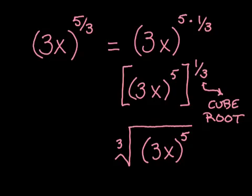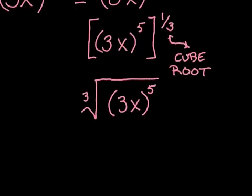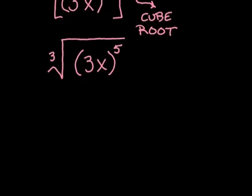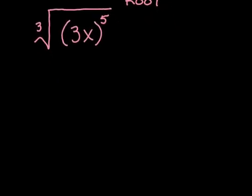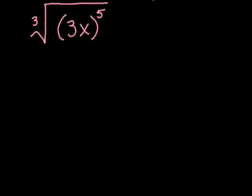Now it's just a matter of putting this into simple radical form, meaning simplifying it as much as possible. So we're going to take our radical here, again moving it over so I have some more room. And first look at this part. By the rules of exponents, 3x to the 5th, that whole amount in parentheses, is going to be 3 to the 5th times x to the 5th.